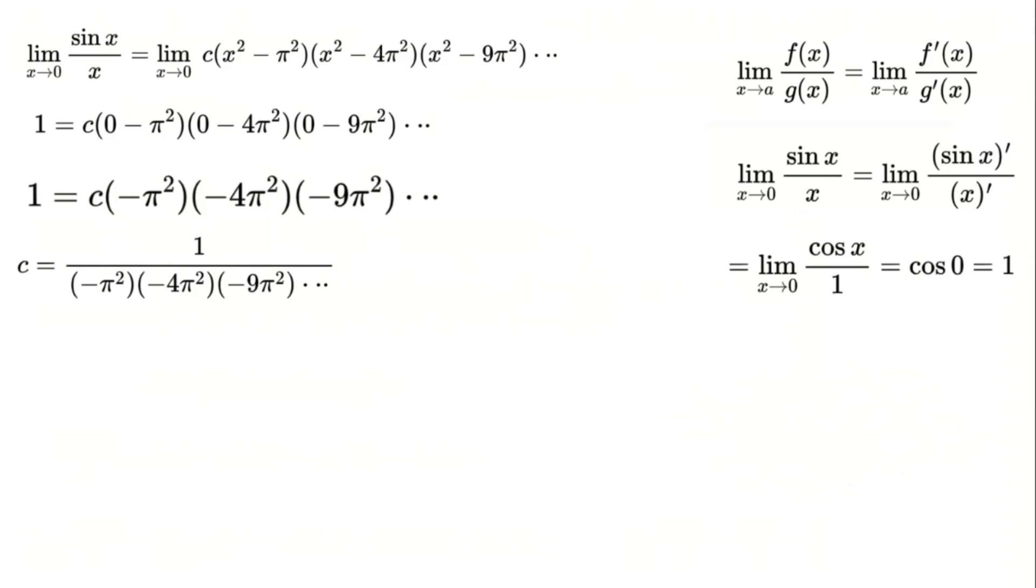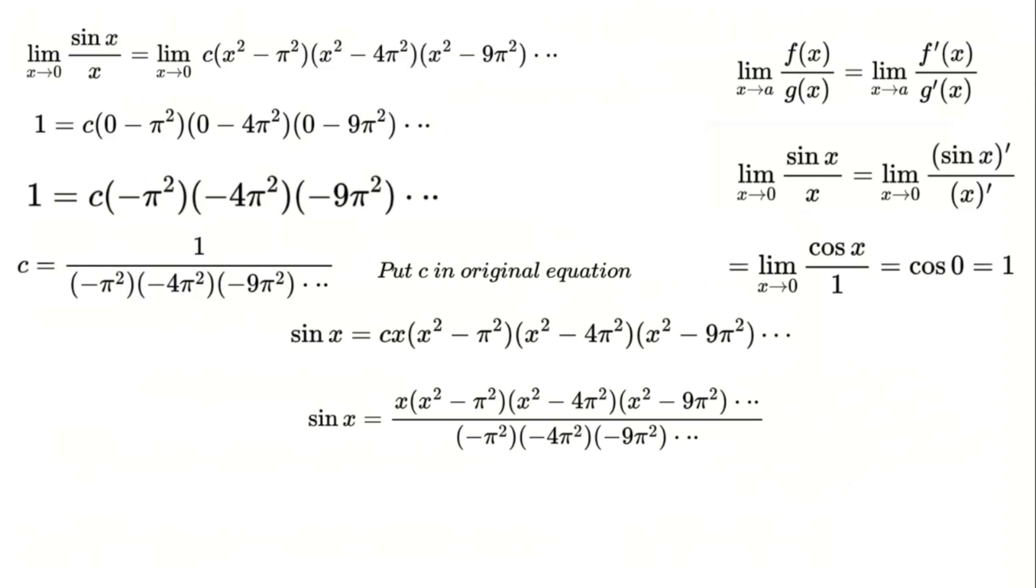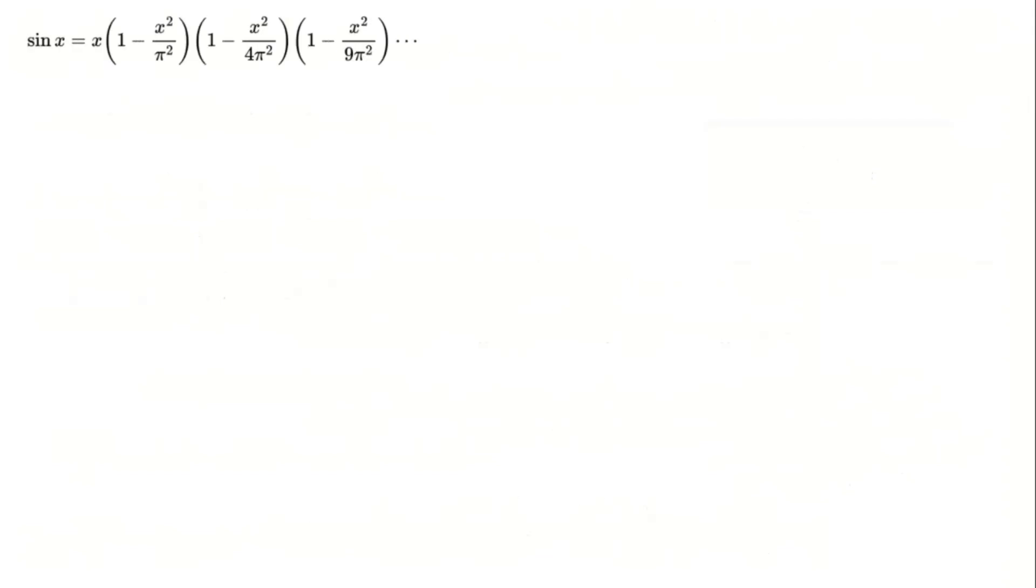Once we have c, we plug it back into the original sine product representation and simplify further. Now let's level up. By taking the natural logarithm on both sides, we convert the product into a sum, a handy move in mathematics. Then we differentiate both sides.